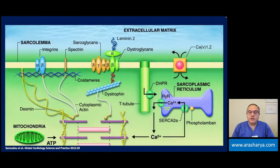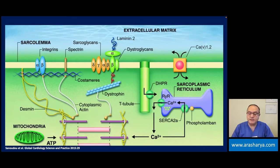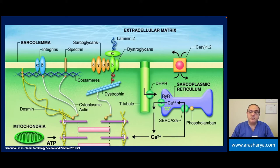Looking back at calcium homeostasis in the myocardial cell, we have the sarcoplasmic reticulum. The release of calcium is regulated through the ryanodine receptor, and the reuptake of calcium is regulated through the SERCA2 pump. Phospholamban function is very important — if we have a mutation which leads to decreased levels of phospholamban protein or decreased function of this protein, we will have increased intracellular calcium and therefore a likelihood of different kinds of cardiac arrhythmia.